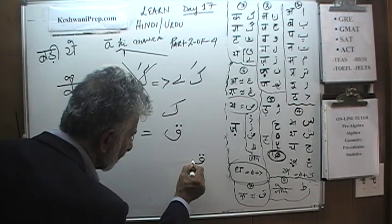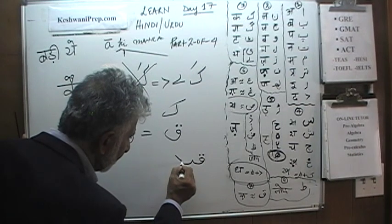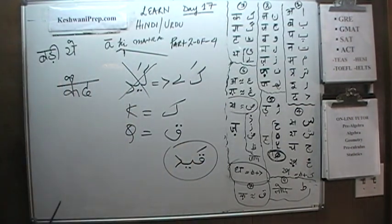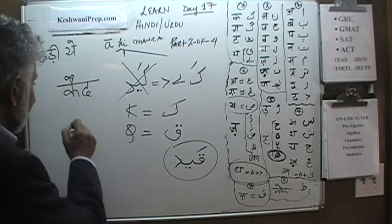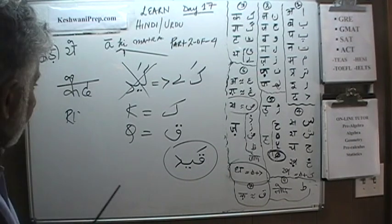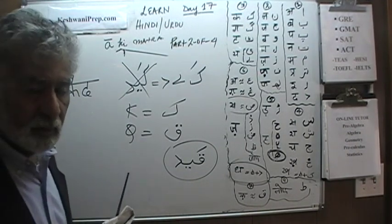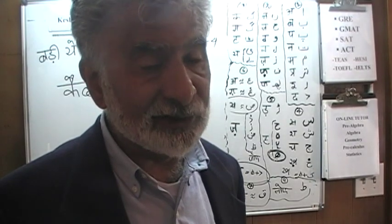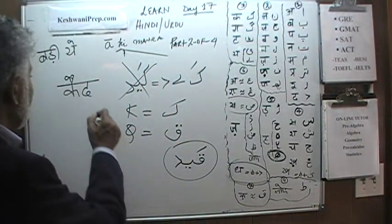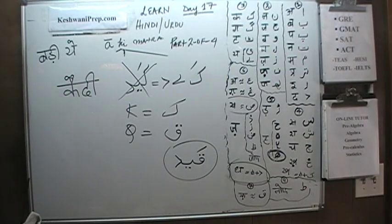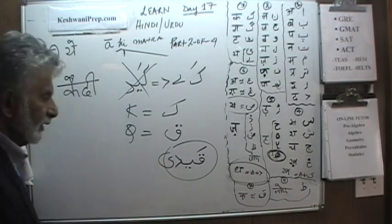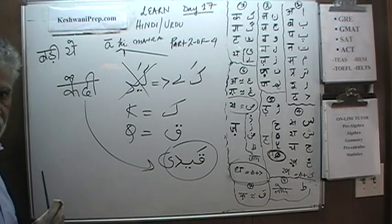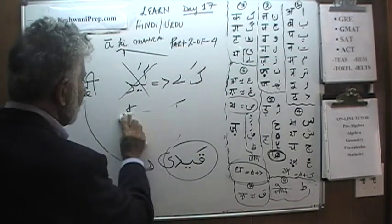When Qaaf is about to join something, it looks like this. Q, Badiyeh, then Dal — that's 'qaid,' meaning prison. Now let's convert the word 'qaid' — prison — into 'qaidi,' meaning prisoner: the one who stays in the qaid. It just needs a Badiye ki matra added. You put a Choti Yeh next to it and it becomes 'qaidi.' Now that's your prisoner — no longer a prison, but a prisoner.